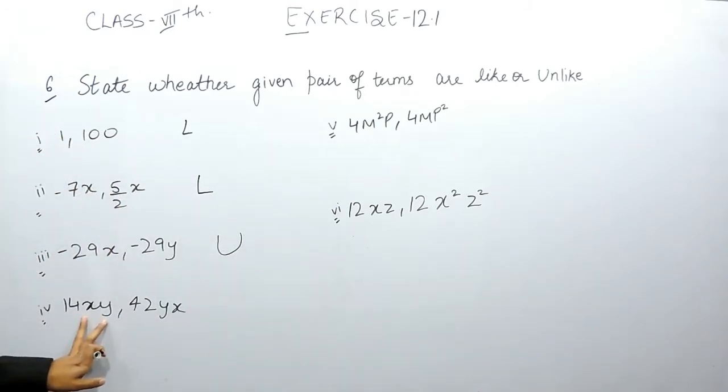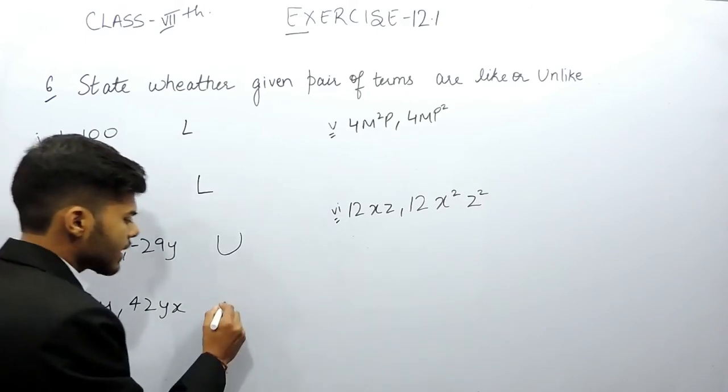The variable quantity is xy and the variable quantity is yx. This means one and the same thing - xy or yx are the same, so that's why it is again a like term.